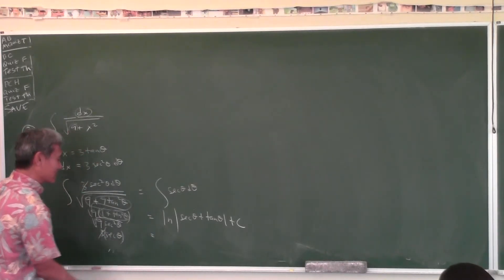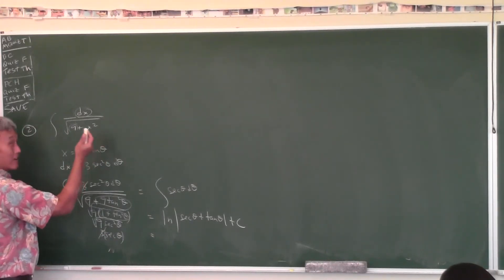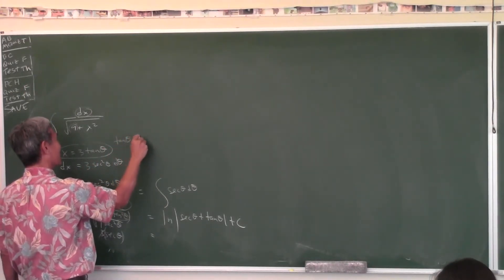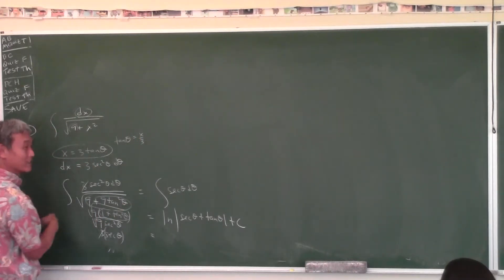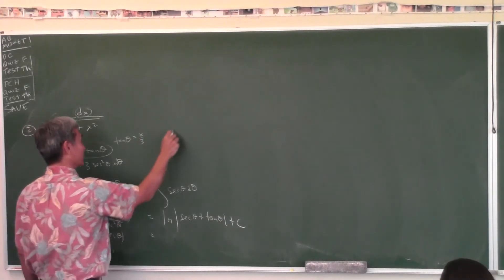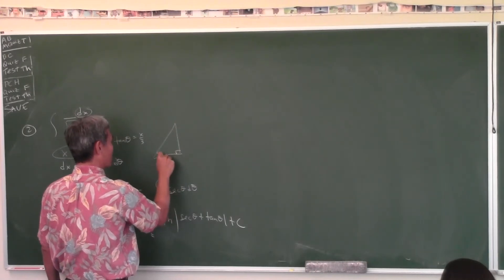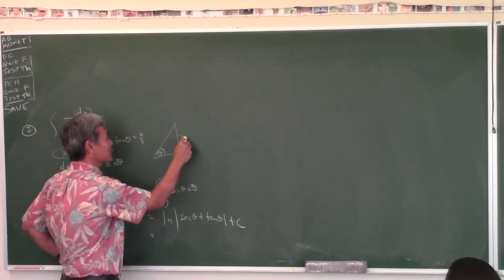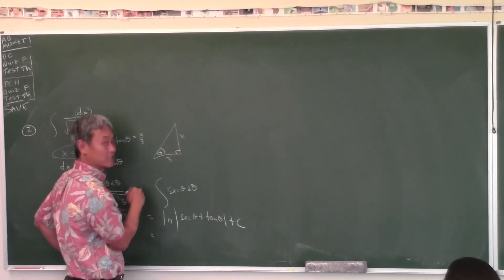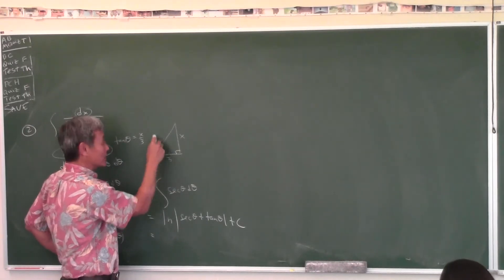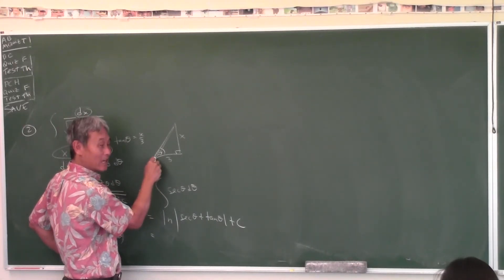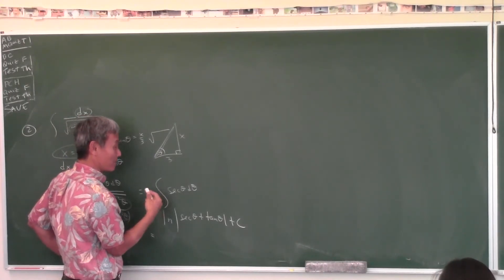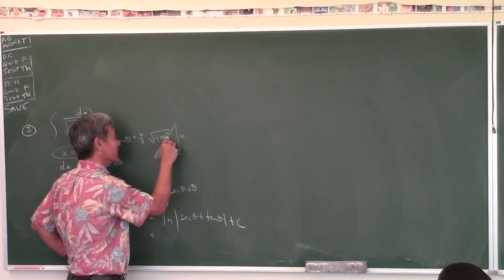If you don't have limits of integration, draw the triangle and change everything back to X's. But if the problem has limits, you can change the limits instead — just like u-substitution. Plug the X-limits into X equals 3 tan θ to find the θ-limits.